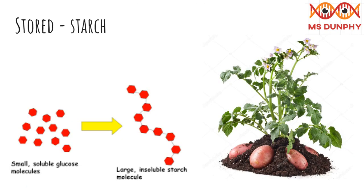Plants can convert glucose into starch. Glucose is stored as starch, so it's ready to use when photosynthesis isn't happening as much, like in the winter. In plants, starch is stored in the roots, stems, seeds, and leaves. Potato and parsnip plants have stored a lot of starch underground over the winter, so a new plant can grow from it the following spring. We eat the swollen storage organs.